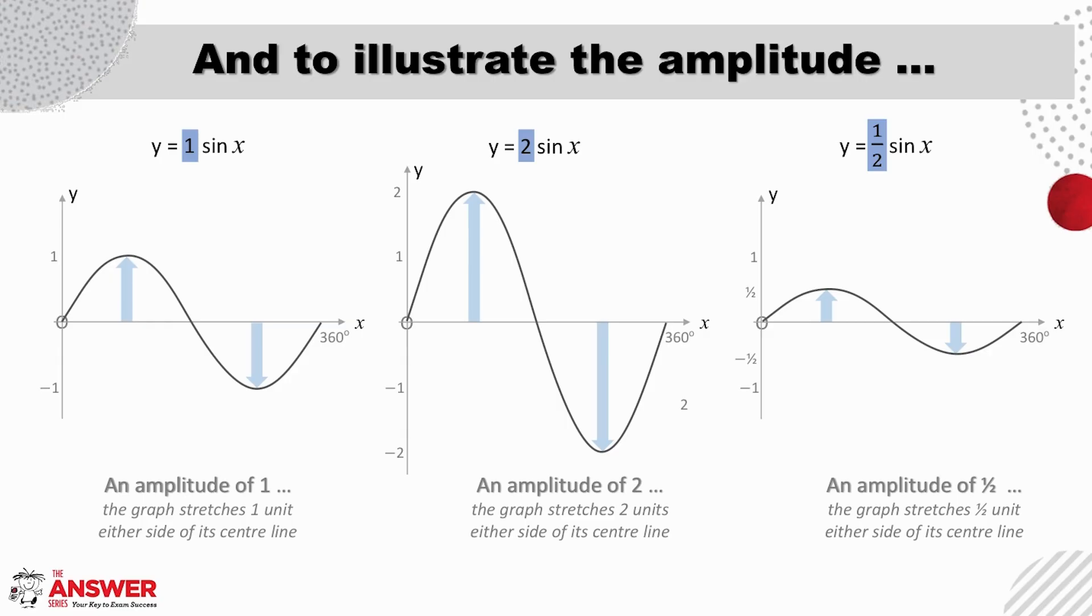Let's quickly recap the three basic facts about graphs that could help us here. First, that every point on the graph makes the equation true. Then that x is here on the y-axis and y is here on the x-axis. And thirdly, each graph's shape is unique as a result of its equation. In other words, the results of a particular pattern will produce a particular type of graph.